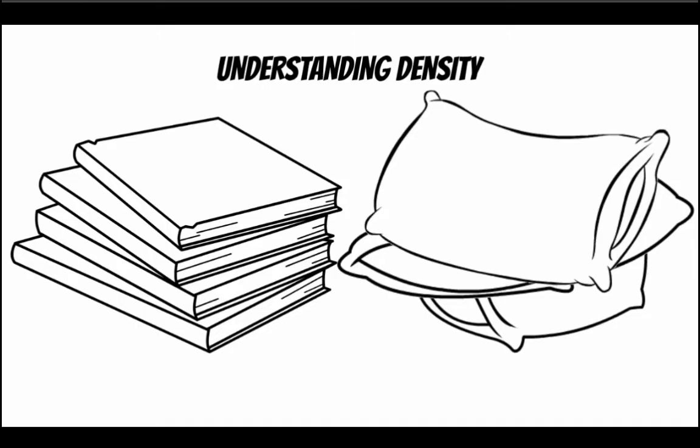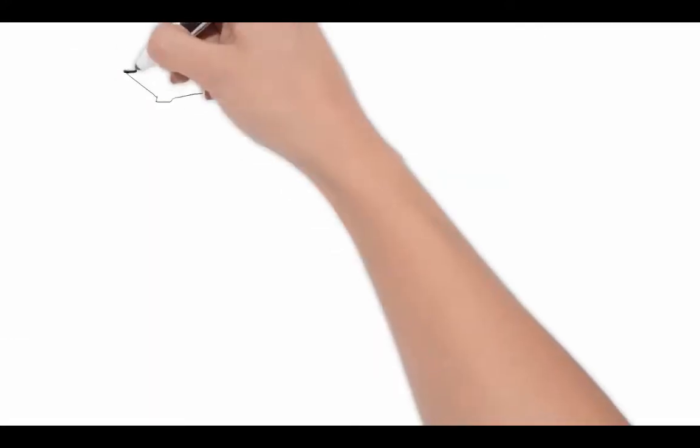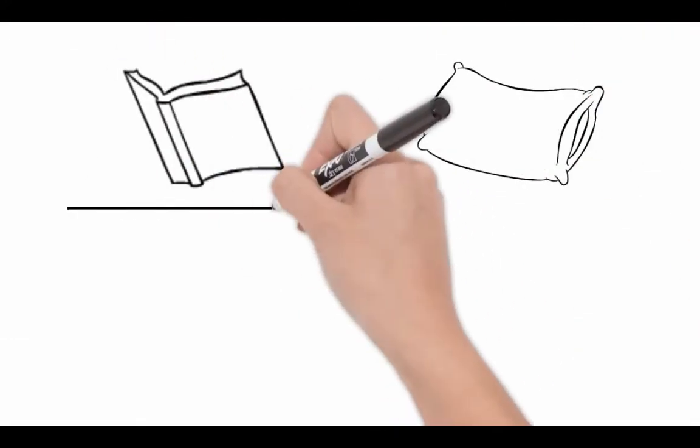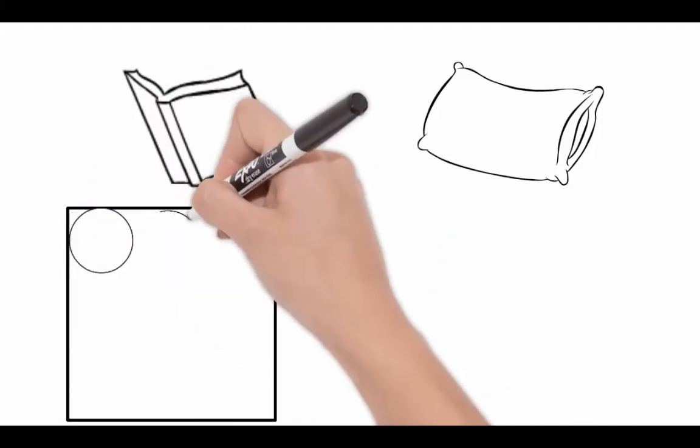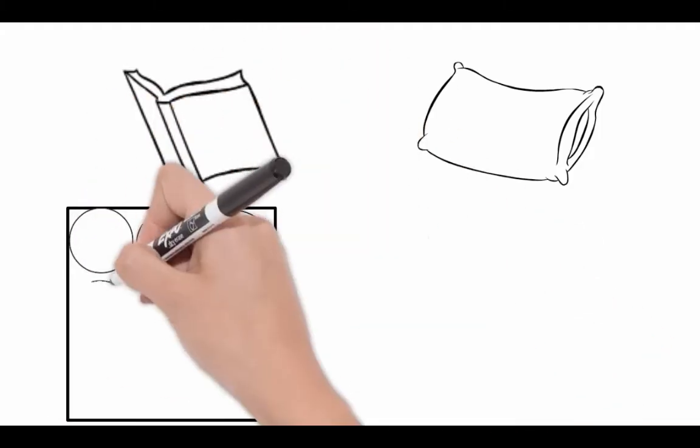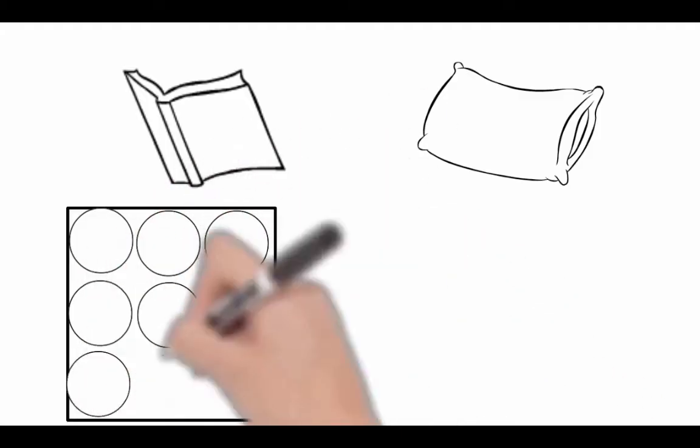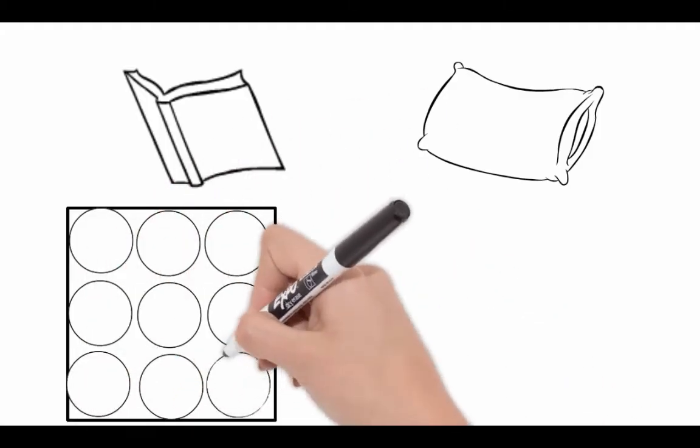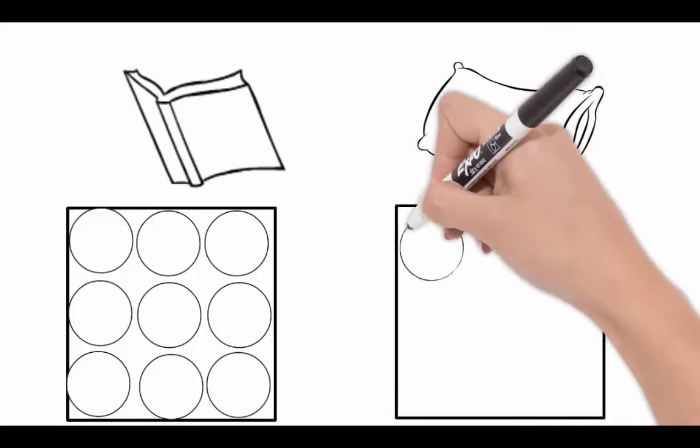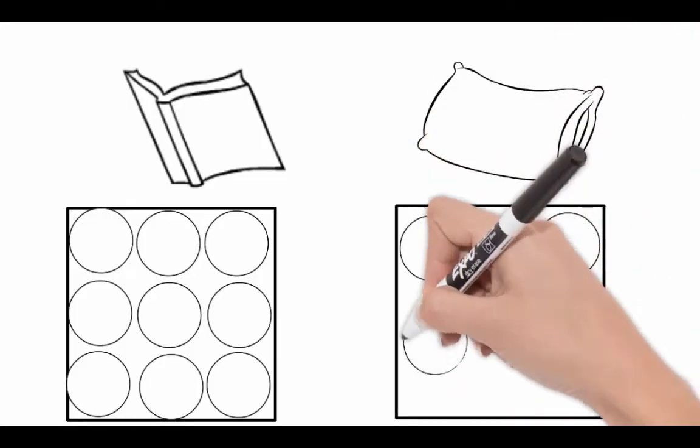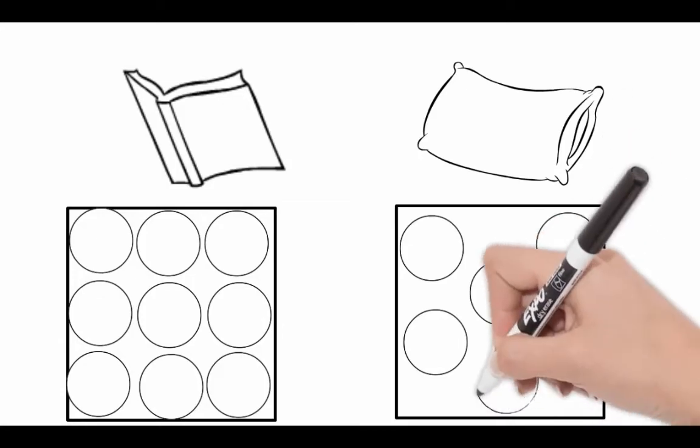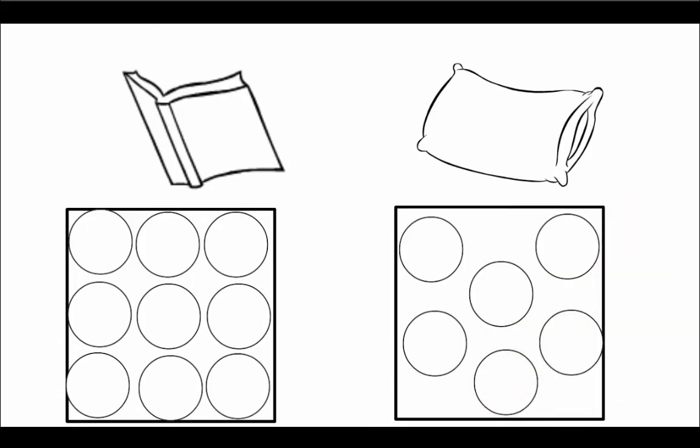Let's zoom in to see what these would look like at a particle level. On the left we have the book particles, and on the right we have the pillow particles. The particles for the books are held much closer together and there are more particles in the same amount of space. The particles for the pillows are further apart; there are fewer particles in the same amount of space. This means that the books are more dense than the pillows.